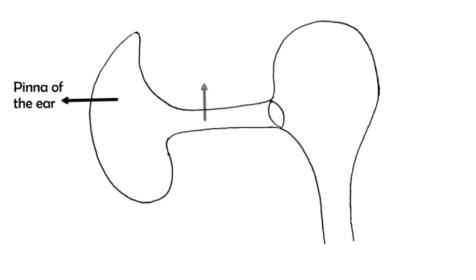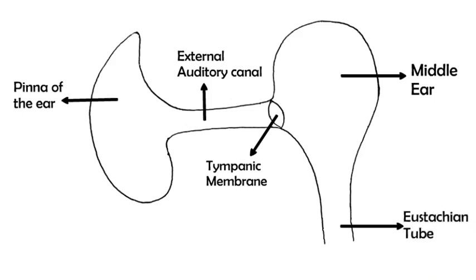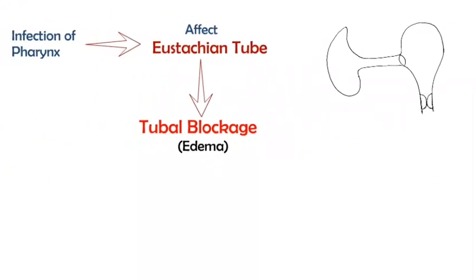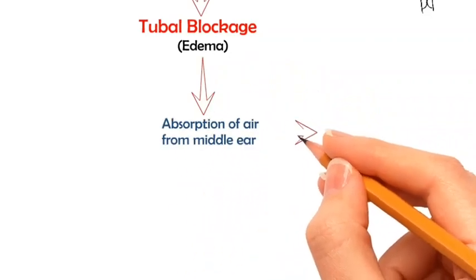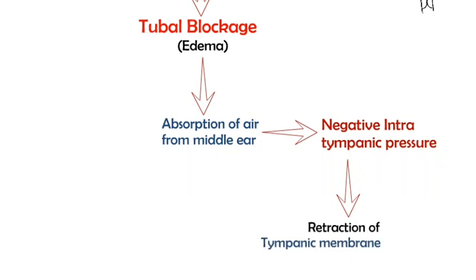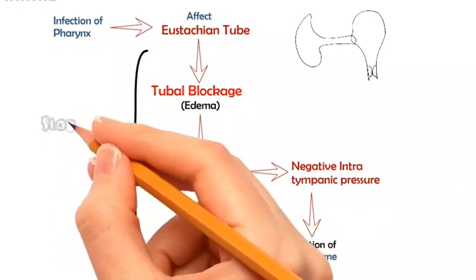This is a simplified diagram of the human ear showing the pinna, the external auditory canal, the tympanic membrane, the middle ear cavity, and the eustachian tube. The spread of infection into the eustachian tube causes edema and blockage of its nasopharyngeal end. The tubal blockage causes the remaining air in the middle ear cavity to be absorbed, producing a negative intra-tympanic pressure which causes retraction of the tympanic membrane. All these events constitute the stage of tubal occlusion.